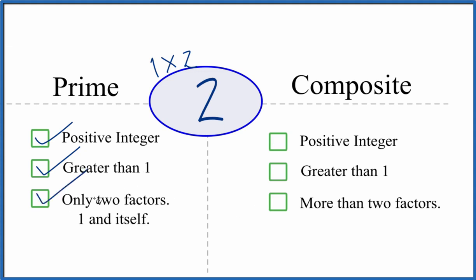That means by our definition here, 2 is a prime number. It turns out it's the only even prime number, but it is a prime number.